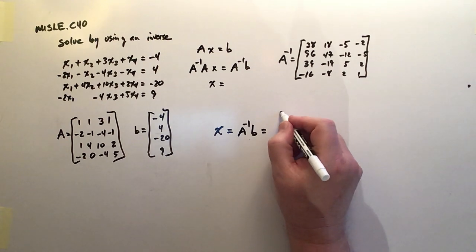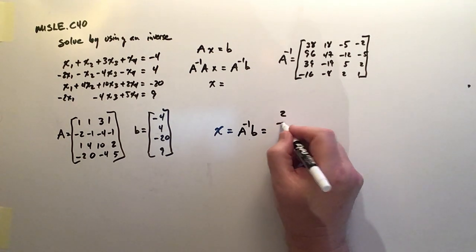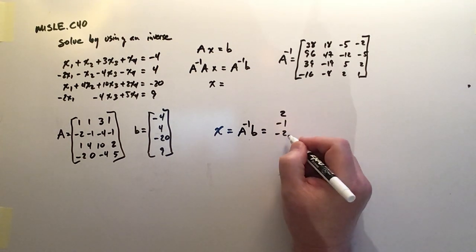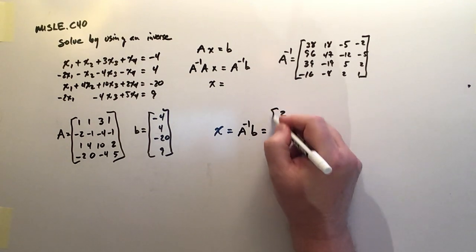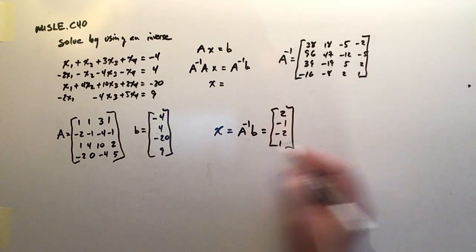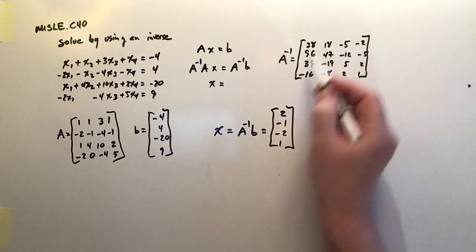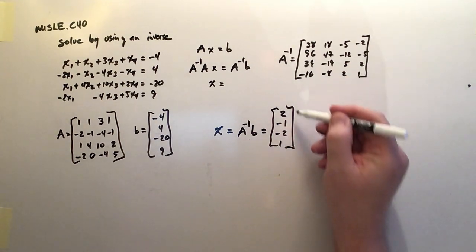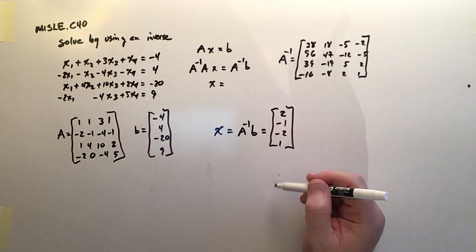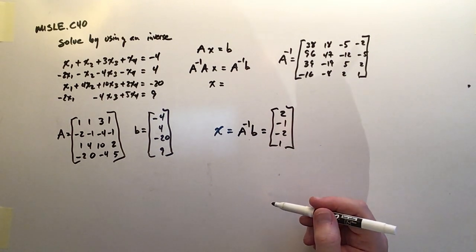I've already worked that out. And the solution actually turns out to be nice. So it's 2, negative 1, negative 2, and 1. And all of that is the result of the product of this matrix times this vector. That matrix multiplication will produce this vector column, and that's the solution to this system.